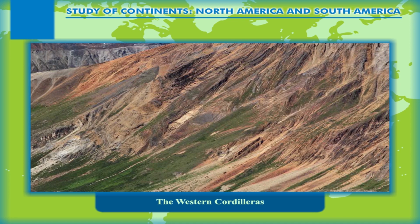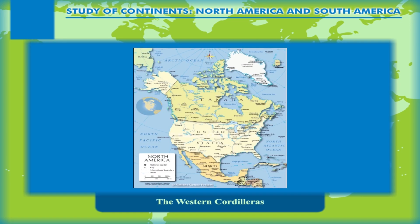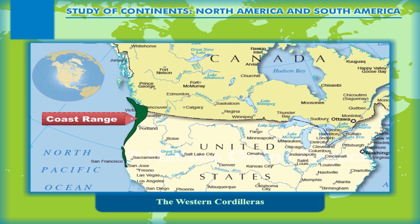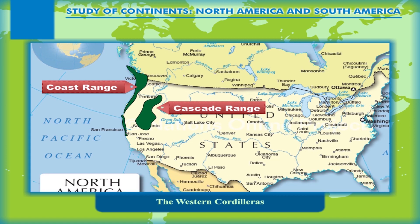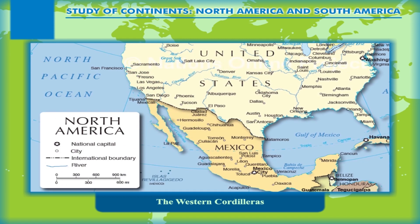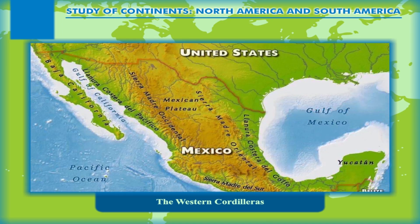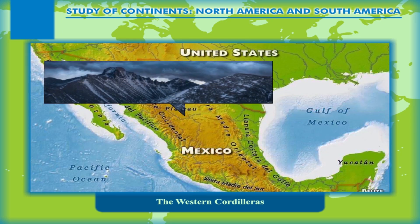The coastal ranges bordering the Pacific, from north to the southern edge of the continent, are the Coast Range, the Cascade Range, the Sierra Nevada, and the Western Sierra Madre, or Sierra Madre Occidental.